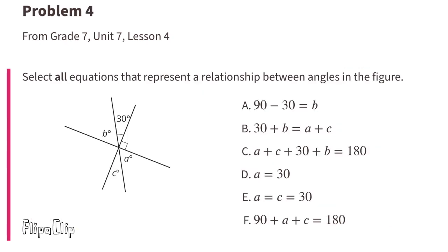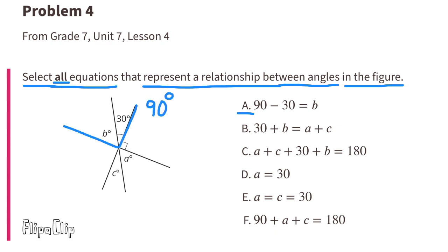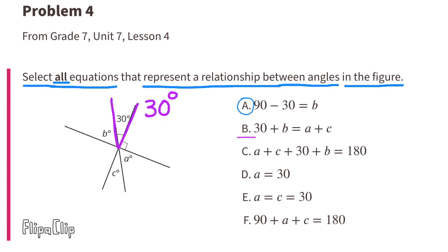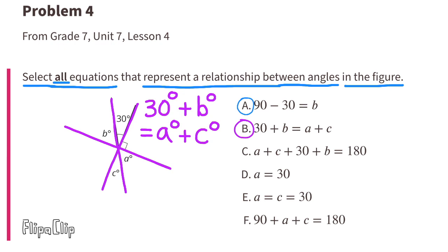Problem number 4, from 7th grade, Unit 7, Lesson 4. Select all equations that represent the relationship between angles in the figure. This 90-degree angle minus 30 degrees leaves the angle with B degrees, so I would select A. B: The 30-degree angle plus the B-degree angle does equal the A-degree angle plus the C-degree angle, because the B-degree angle is a vertical angle of the A-degree angle, and the C-degree angle is a vertical angle of the 30-degree angle. So I would select B.